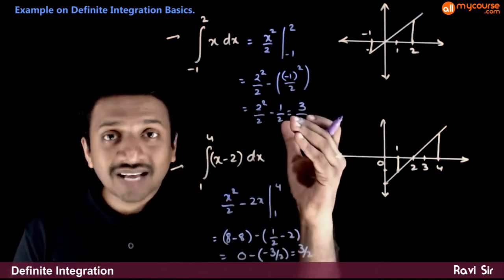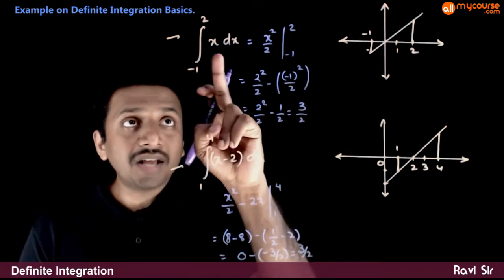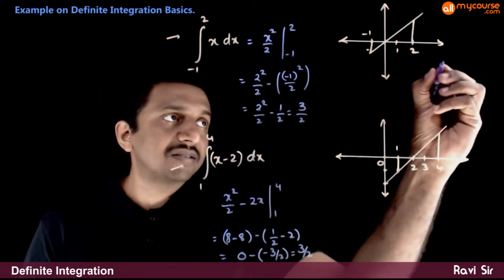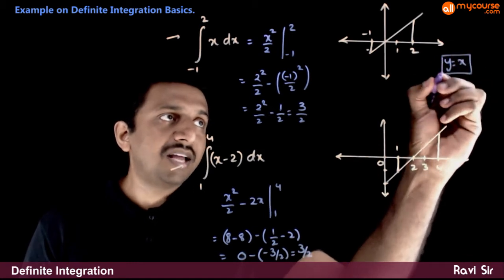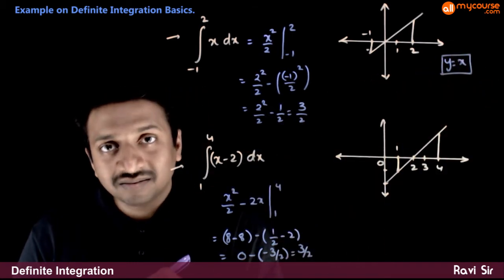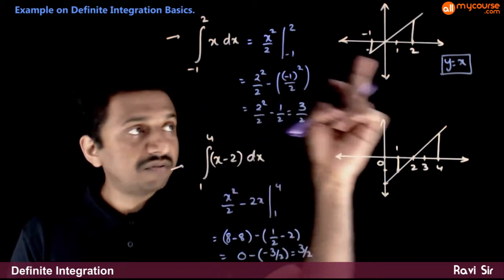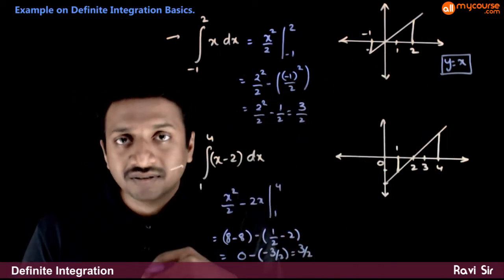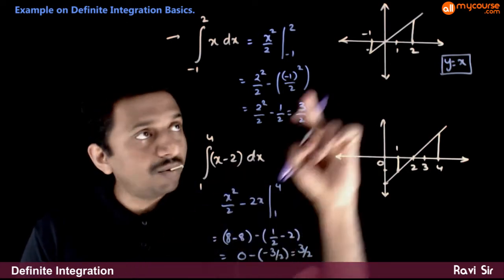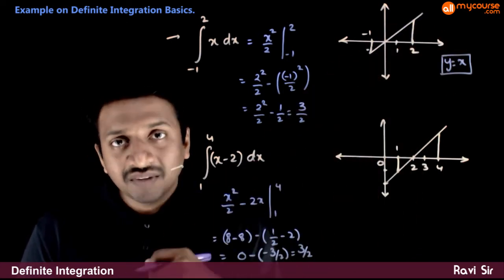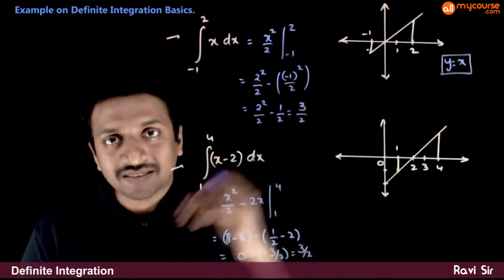Now let us try to understand this answer geometrically. If you draw the graph of y is equal to x — this is my f of x — you know that the graph is a straight line moving at 45 degrees with the x-axis.